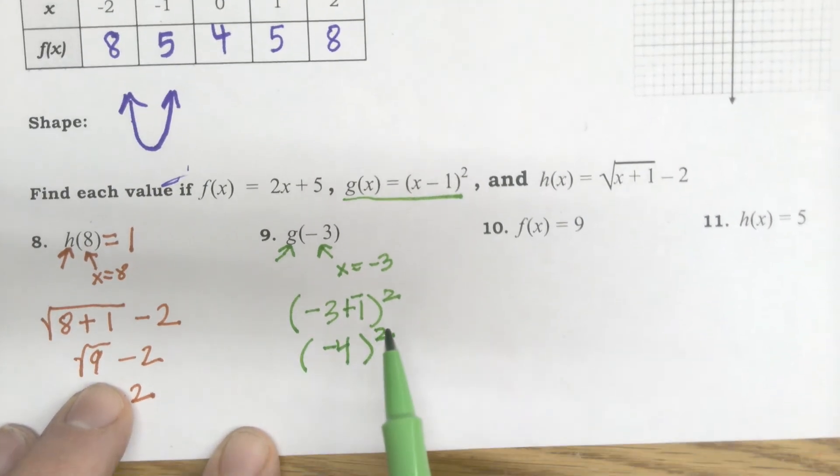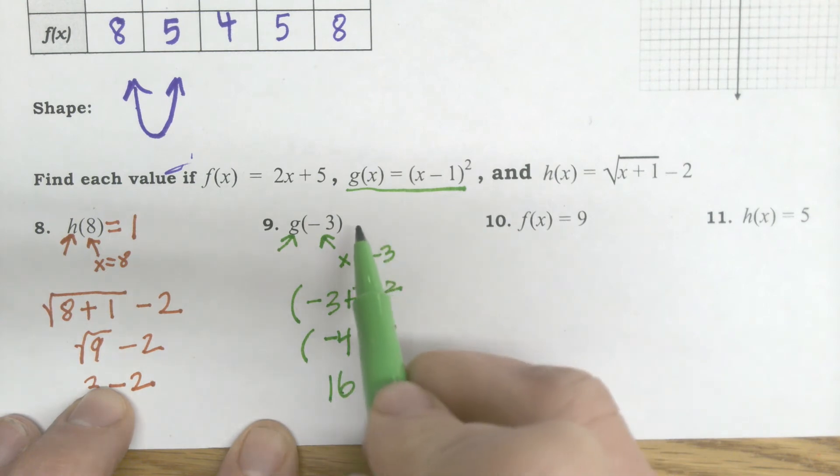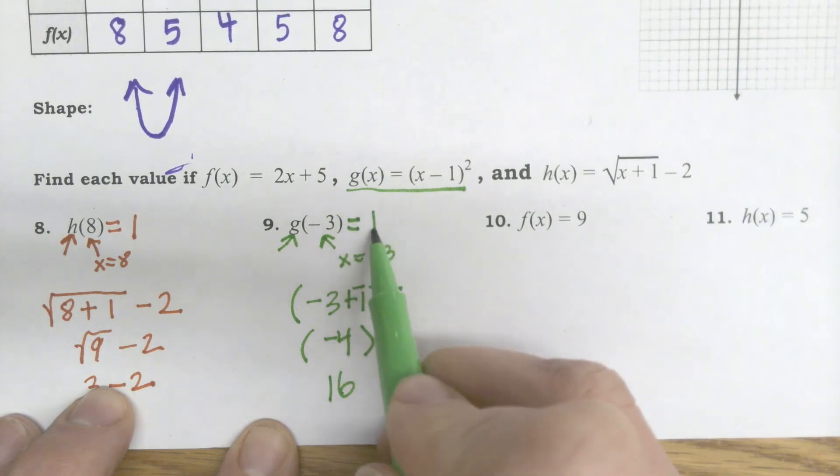And then don't forget when you square a negative, what happens to it? It becomes positive. Negative 4 times negative 4 is positive 16. So G of negative 3 is positive 16.